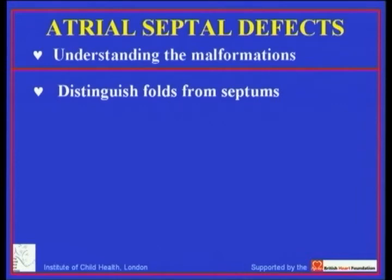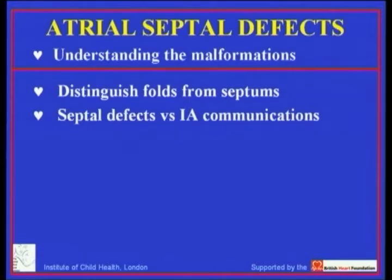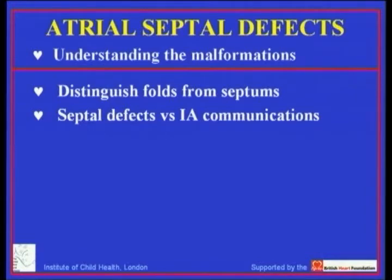We're going to start off with what at first sight seems to be a relatively straightforward malformation — so-called atrial septal defects. But if we are fully to understand holes between the atrial chambers, the first thing we have to do is to distinguish a fold from a septum. Because once we have done that, we're then able to distinguish true holes within septal structures, as opposed to holes that permit communications between the atrial chambers but which are not within the confines of the normal septum. And to me, this is the key to understanding so-called atrial septal defects, which becomes a misnomer.